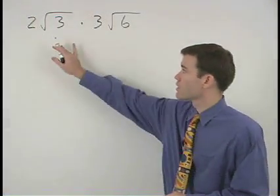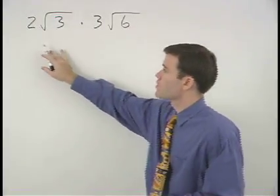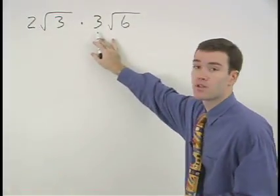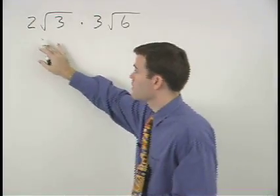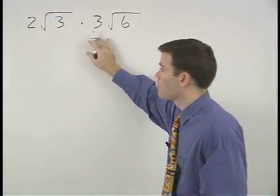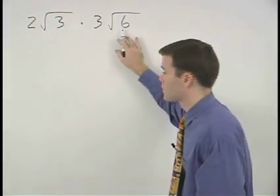To multiply two radical expressions that have numbers outside the radicals, simply multiply the numbers outside the radicals together and multiply the numbers inside the radicals together.